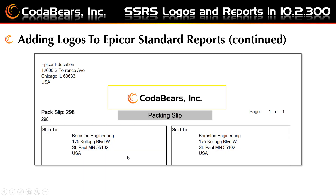Now you would go to the Epicor menu item that includes that standard report. In this case, we're printing the packing slip, so you would go to customer shipment entry and print a packing slip, or customer shipment tracker, and use the standard report style. Then you can print preview and see the results once you've added your logo.